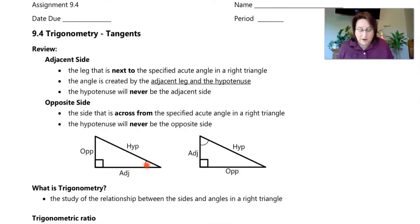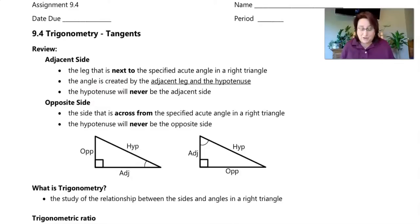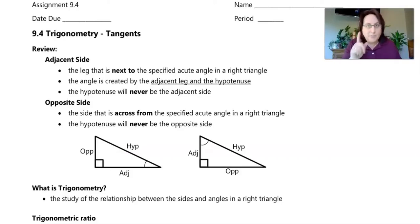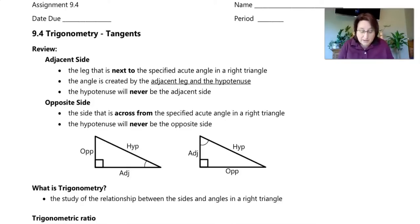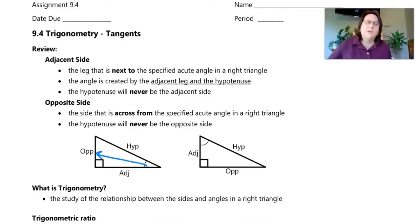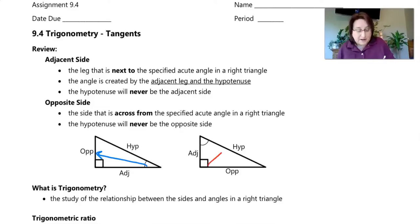Right here we have our angle. The adjacent side is created by the adjacent leg and the hypotenuse. The hypotenuse will never be the adjacent side, because the hypotenuse is always across from the 90-degree angle — its name is hypotenuse. The opposite side is the side that is literally opposite of the angle; it is across the triangle, opposite of the angle we're looking at. The hypotenuse will never be the opposite side either.